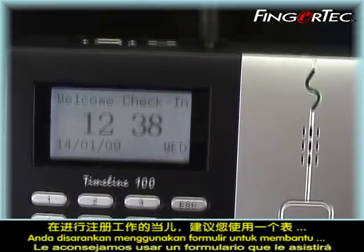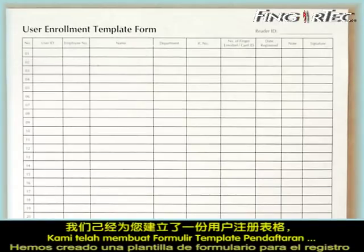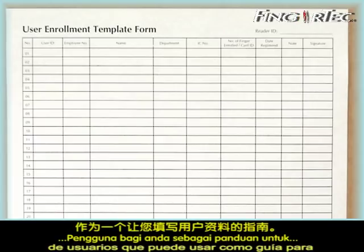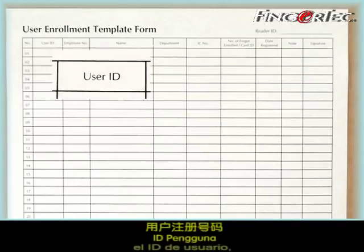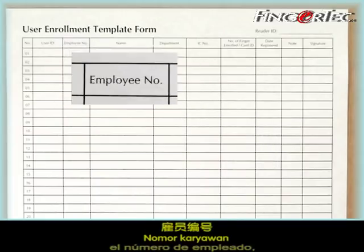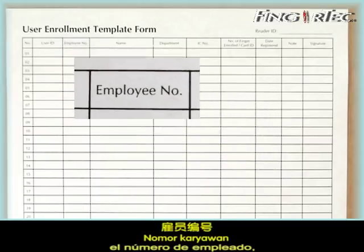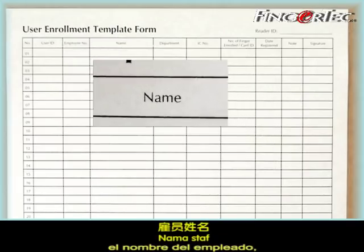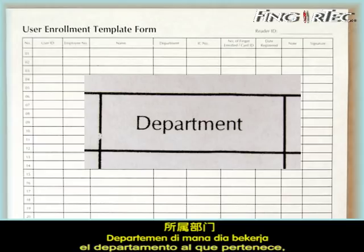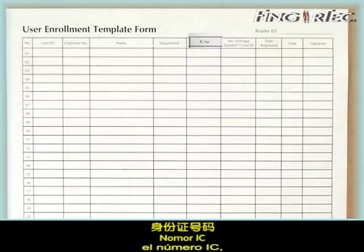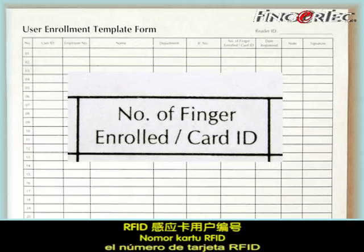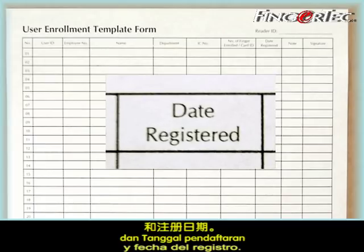You are advised to use a form to assist you during enrollment. We have created a user enrollment template form for you to use as a guide to input the data of the user. The form should contain relevant information such as the reader ID, the user ID, the employee number, the name of the staff, the department he or she belongs to, the IC number, RFID card number, and the date of enrollment.